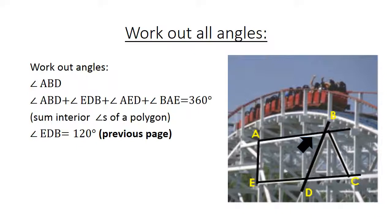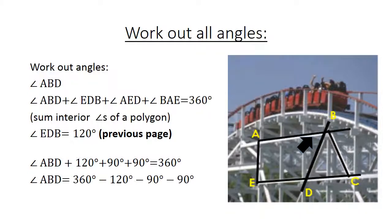Angle EDB equals 120 degrees. We have worked it out in the previous slide. So we have angle ABD plus 120 degrees plus 90 degrees and 90 degrees equals 360. Angle ABD equals 360 degrees minus 120 minus 90 minus 90 equals 60 degrees.